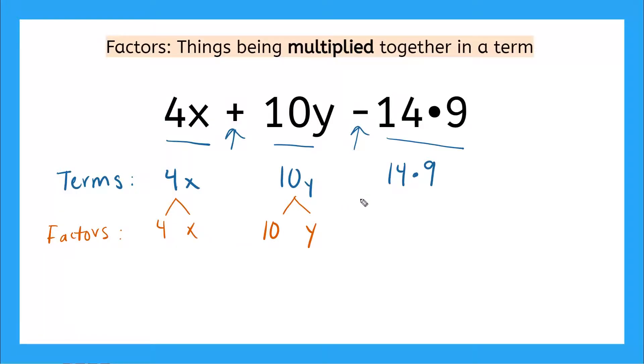Now in this last term, how many factors are there? Remember, what does this dot or this bullet mean? Yeah, that's right. This means multiplication. So if there's two things being multiplied together in my third term, what are my factors? Yeah, 14 and 9. So there are two factors in my third term.